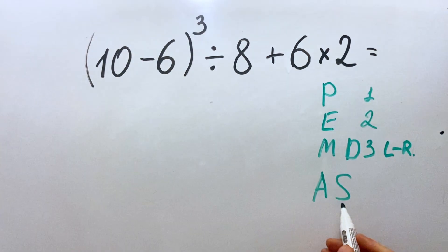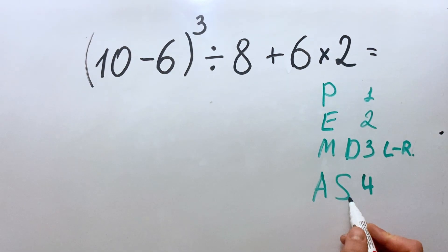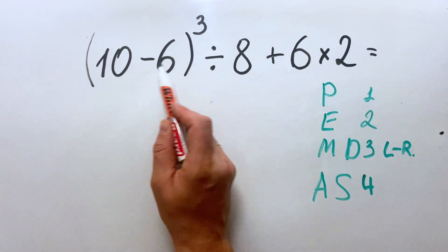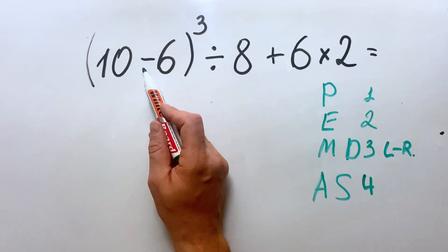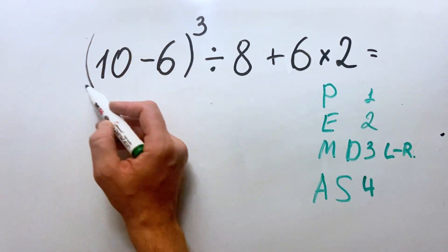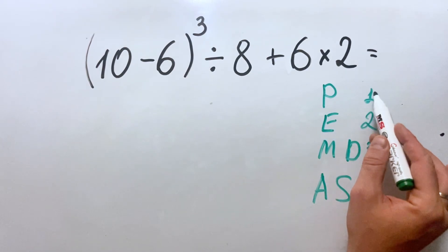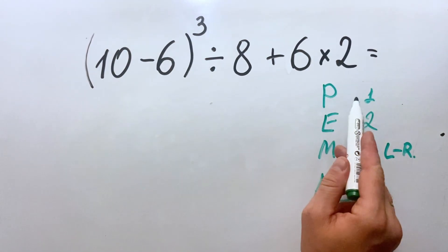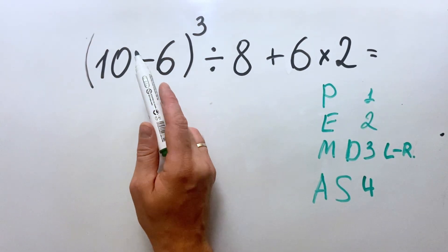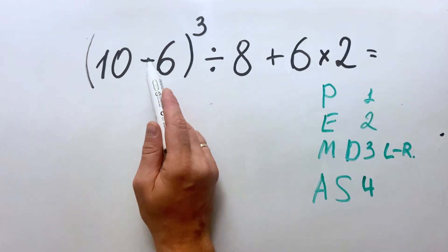And the last is addition and subtraction. We can see that we have addition and subtraction. Although this is in the first place because the subtraction is within the parenthesis, we will do it in the first place. So again, if we have parenthesis we do everything inside, either it's addition, subtraction, multiplication, or division.